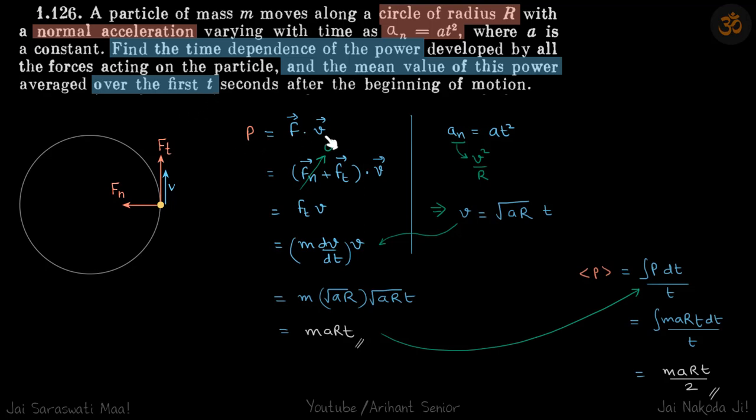Power is F dot v. F we can break into its normal and tangential components because it's travelling in a circle. For normal reaction, this dot product is zero, so we are left with F_t into v.